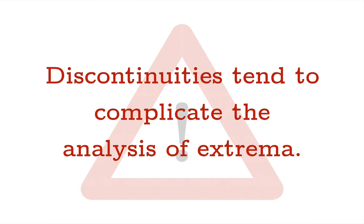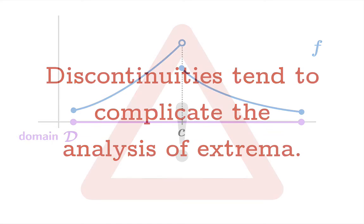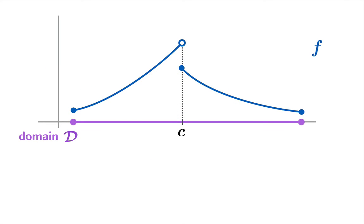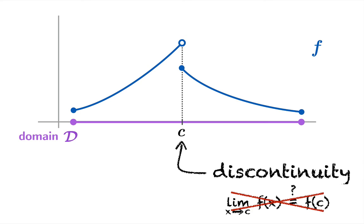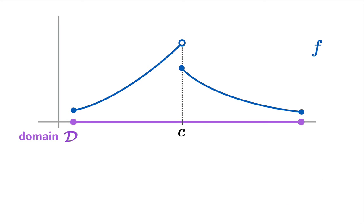Now a word of warning: discontinuities tend to complicate the analysis of extrema. Here's a function f with a closed interval domain but a discontinuity at c. We recognize the discontinuity because the limiting value as x approaches c does not equal f(c) — in fact, the limit doesn't even exist. This is an honest discontinuity.